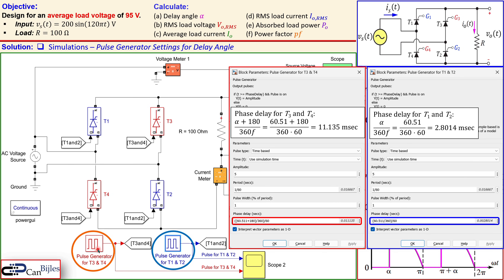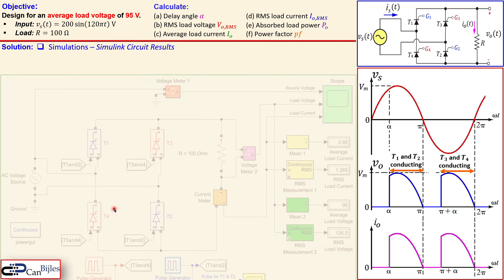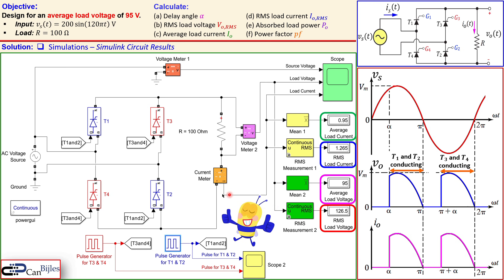With the pulse generator settings done, let's look at the simulation results. The average load voltage reads 95 volts — exactly as designed. The RMS load voltage is 126.5 volts, matching our calculation. The average load current is 0.95 amps and the RMS load current is 1.265 amps — all consistent with the hand calculations.